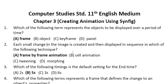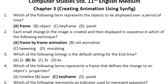Question 2: Each small change in the image is created and then displayed in a sequence — in which of the following techniques? There are different techniques, and the answer is frame-by-frame animation. The others — cell animation, tweening, and morphing — are not in our course. I have explained all these techniques in the video of this chapter. The answer is A.